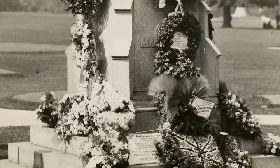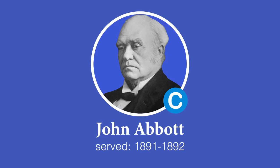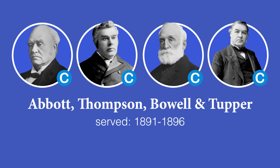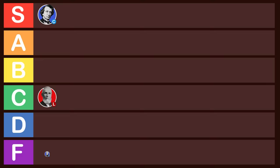MacDonald died in office in 1891, and four different men each briefly served as Prime Minister in the four years that followed: John Abbott, John Thompson, Mackenzie Bowell, and Charles Tupper. MacDonald was such a domineering personality that it was considered quite difficult to find a good replacement for him within the Conservative Party after his death. These four guys are thus just mostly known for symbolizing this politically chaotic time and accomplished virtually nothing of note. They are all F-tier.